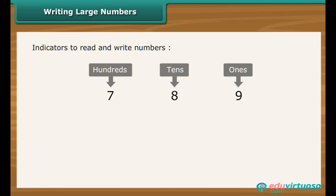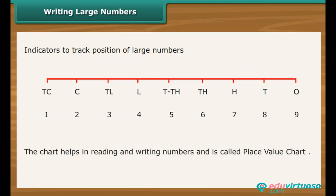In a decimal number system, the value of a digit depends on its place or position in the number. Each place has a value of 10 times the place to its right. It can be extended to crores. The chart helps in reading and writing numbers and is called a place value chart.